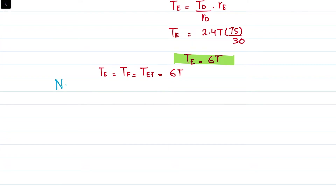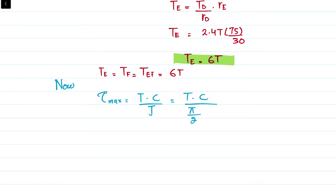The maximum shearing stress in general is equal to T × c divided by J, where J is the polar moment of inertia, T is torque, and c is the radius of the shaft. For a solid shaft, J = π/2 × c⁴, giving maximum shearing stress = 2T / (π × c³). We will use this formula to find the required radius of each shaft.